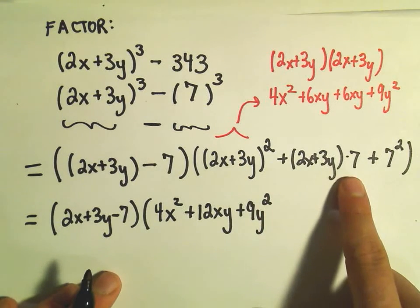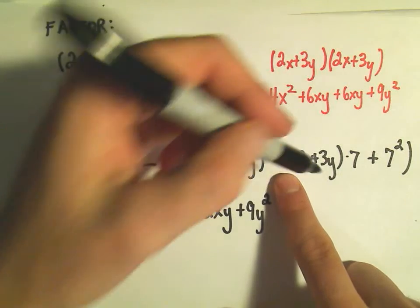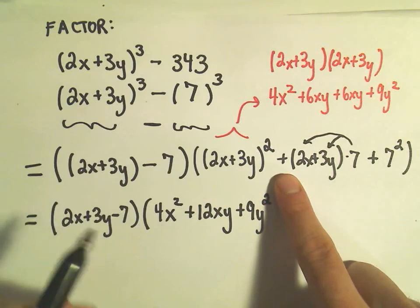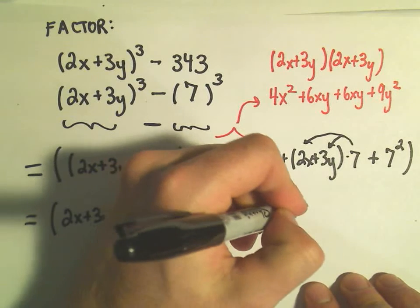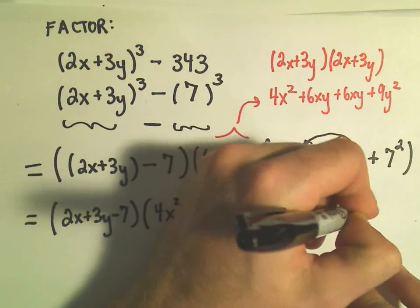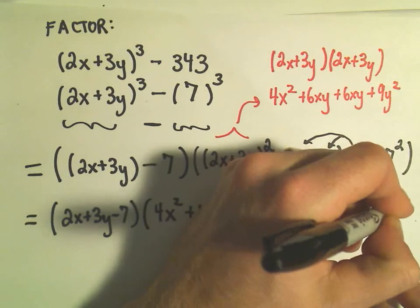You can think about the 7 as being in front of the parentheses. So to get rid of the parentheses we would have to distribute the 7. So we would get a 14x plus 21y. And then 7 squared would be 49.